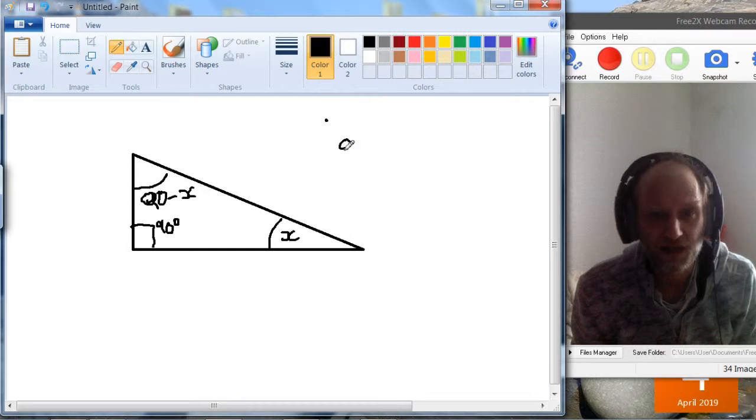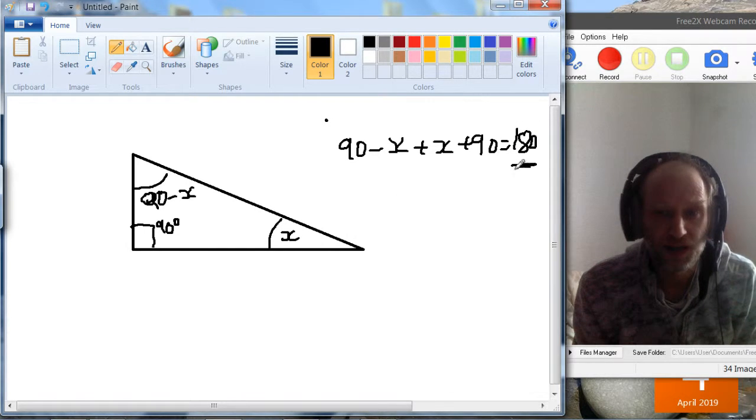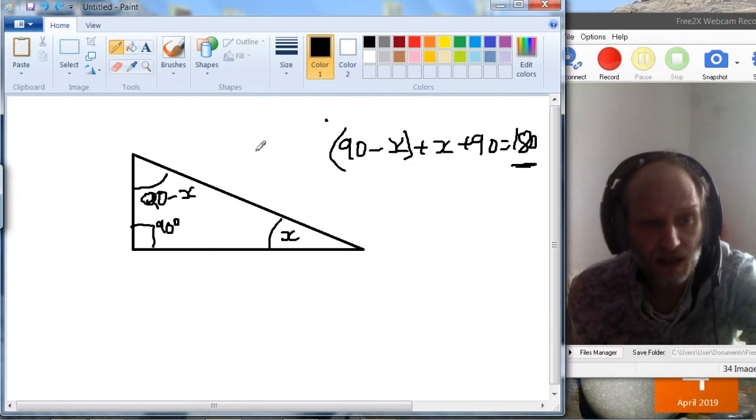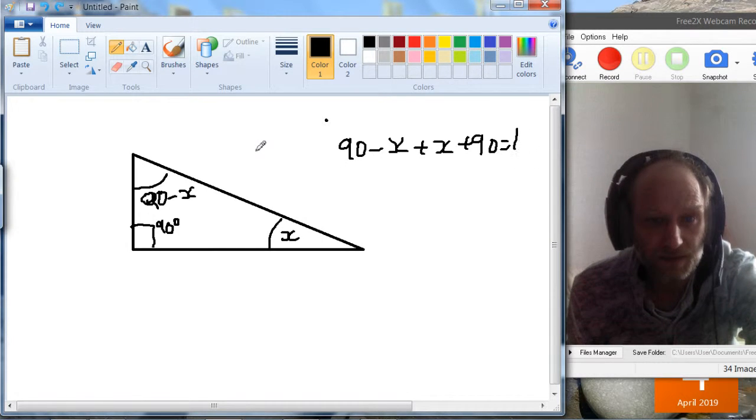Why? Because 90 minus x plus x plus 90 equals 180, and we know that the angles inside the triangle add up to 180. We know this one's 90, so what's left is that. So this one and this one added together always add up to 90.